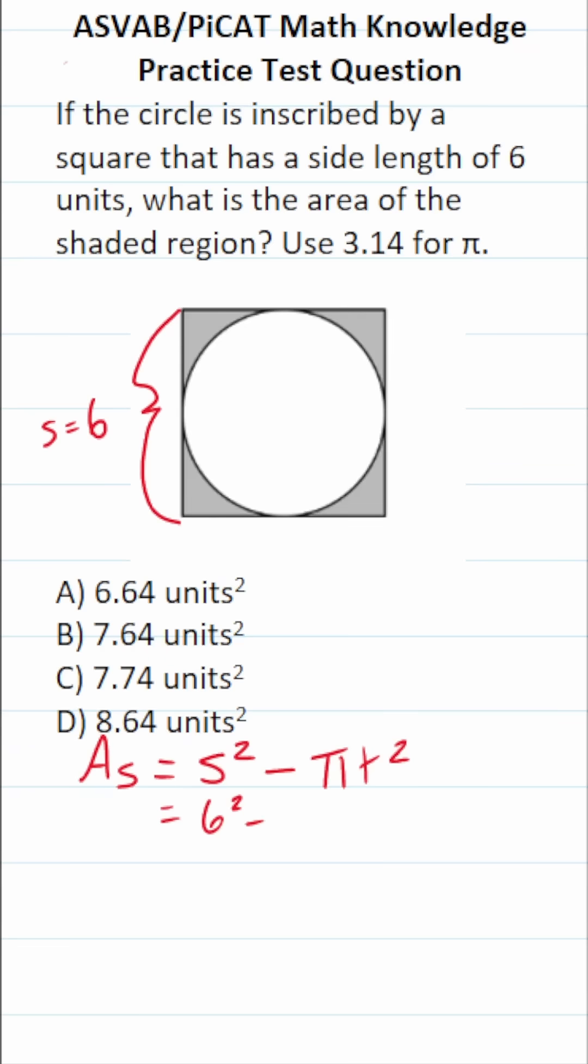This becomes 6 squared minus pi. What is the radius of this circle? Well, we know that the diameter, which is the distance from edge to edge of the circle and through the center point, is 6. Its radius is going to be half of that. So this is the radius.